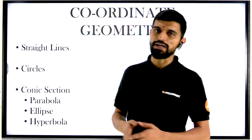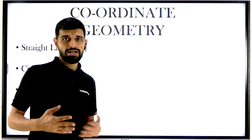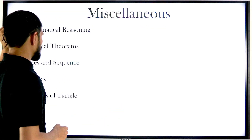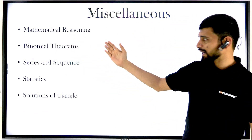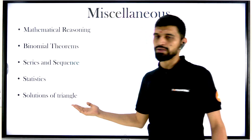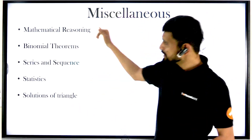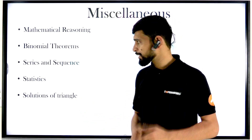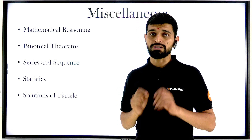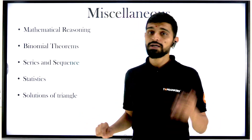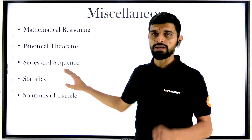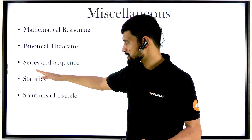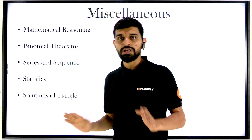So 15 plus about 5 questions makes 20 questions, and there are 10 questions in miscellaneous — so 10 questions there. In miscellaneous, what we need to prepare includes: mathematical reasoning, binomial theorem, series and sequence, statistics, and solutions of triangle. Mathematical reasoning, statistics, and solutions of triangle — these 3 topics are such that if you prepare them, it will not take more than one day's preparation. Even if you don't know the topic at all, you can dedicatedly assign one day per topic and get exam-ready. So this is very easy.